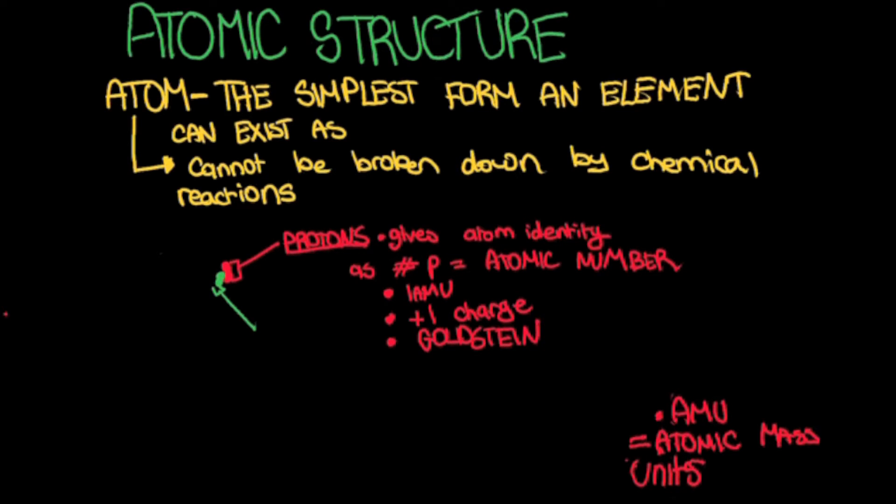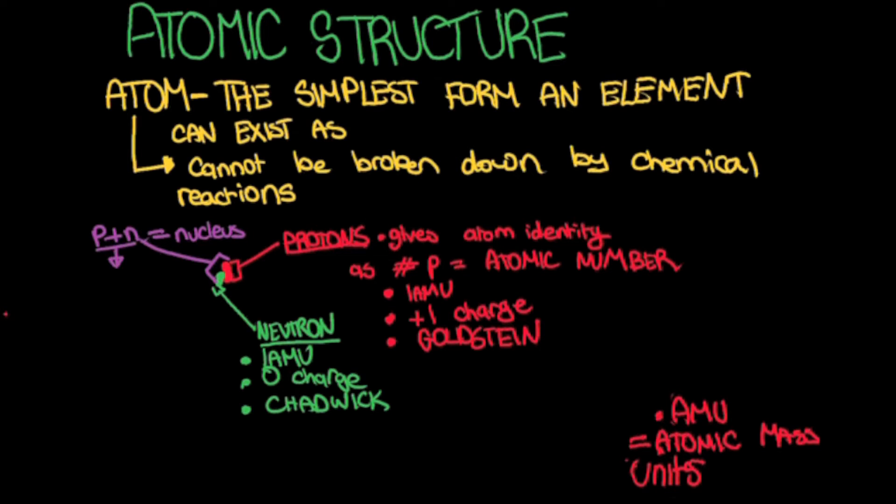Another subatomic particle we will look at is the neutron. The neutron weighs 1 amu and has a neutral charge or a charge of 0. It was discovered by a scientist called Chadwick. The protons and neutrons are located in the center of the atom. This region is called the nucleus. The numerical value for the protons plus neutrons is called the atomic mass.